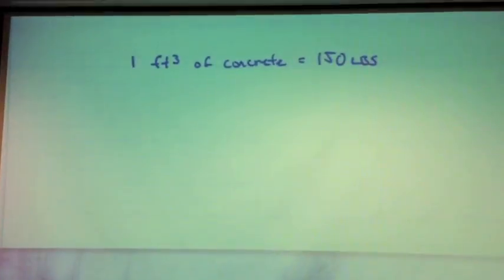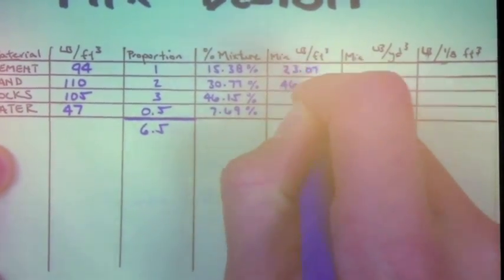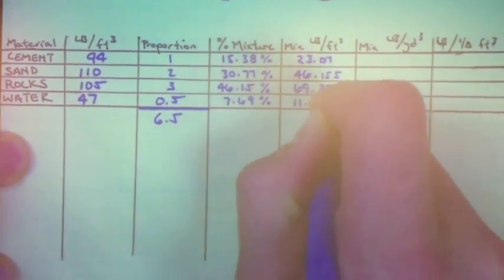Since one cubic foot of concrete weighs 150 pounds, we multiplied each percentage of mixture times 150 to find the weight of a cubic foot of that ingredient.